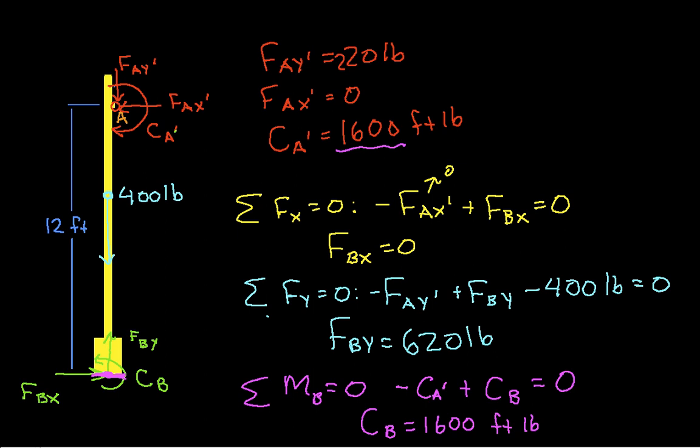There you have it. That's an example of how to do rigid joints, or sometimes we call them fixed supports. It also is an example of how to use two free-body diagrams to get forces that are internal to the object of interest. In this case, we're looking for forces and the couple at the joint between the arm and the pole. Thanks for watching.